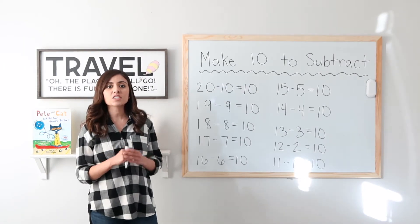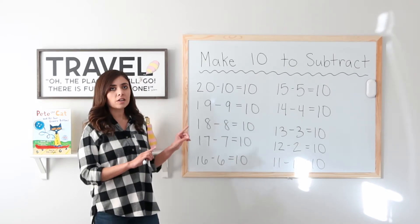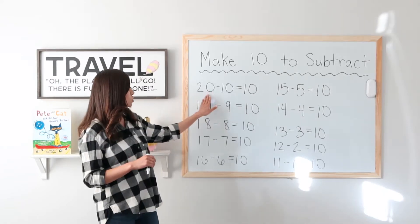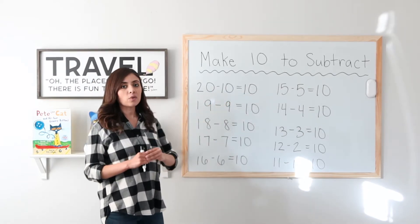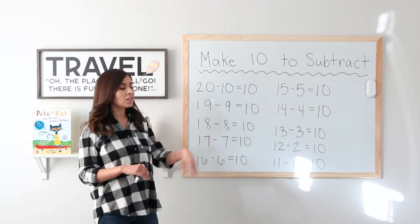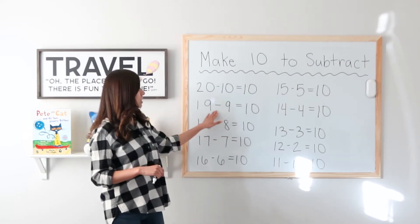Before we get into the lesson, let's go ahead and look at different ways to make 10. When you know how to do this part, this lesson will be way easier for you. Okay, we have 20 minus 10 equals 10. We know that because 10 plus 10 equals 20. That's a doubles fact.